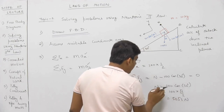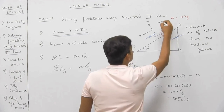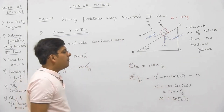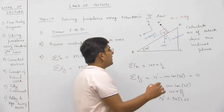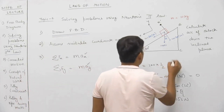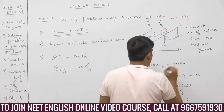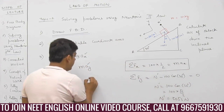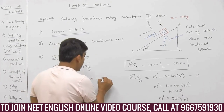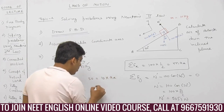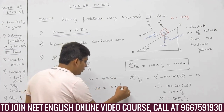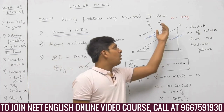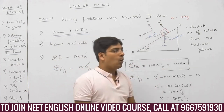Don't get confused between N (normal reaction) and N (Newton) — let this be N-dash. So summation Fx: 100 × (1/2) equals mass multiplied by acceleration of the body. That is 50 = 10 × Ax, so acceleration Ax equals 5 m/s² down the inclined plane, along the chosen x axis. There is no motion along the y axis.